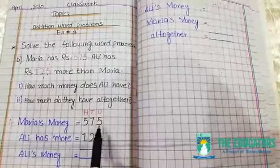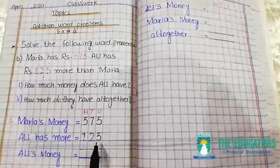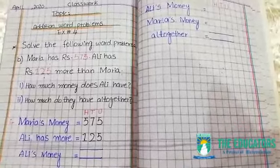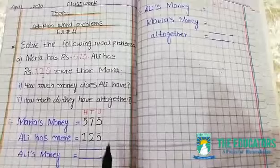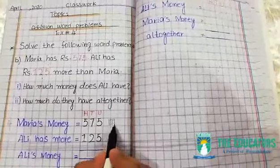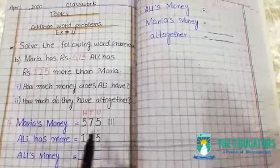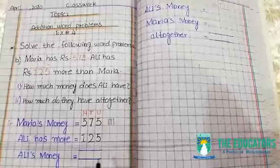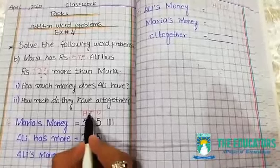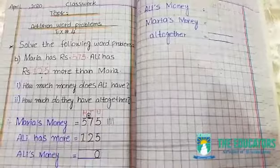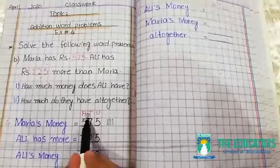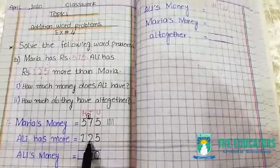125 rupees. Agar hum students in dono ko add kar dein to hamare paas Ali ki money aa jayegi. To hum add karte hain: 5 aur 5 — 10, 0 aur 1 carry jayega 10s mein. 7 aur 1 — 8, aur yeh 2. Phir 5, 6 aur 7.